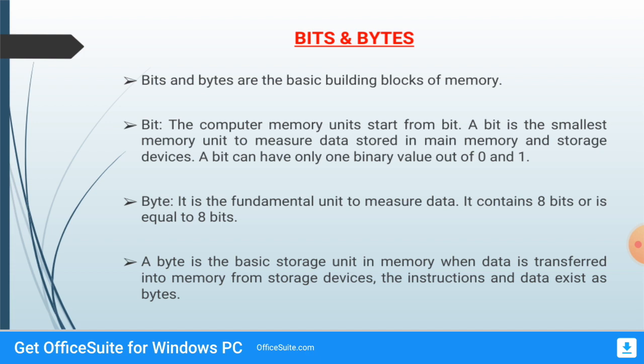For example: 1,1,0,0,1,0,1,0 — these 8 bits together form a single byte. So remember: bit is the smallest unit and byte is the fundamental unit. A bit can have a value of 0 or 1, while a byte is the combination or collection of 8 bits.